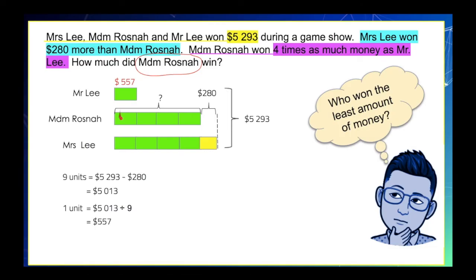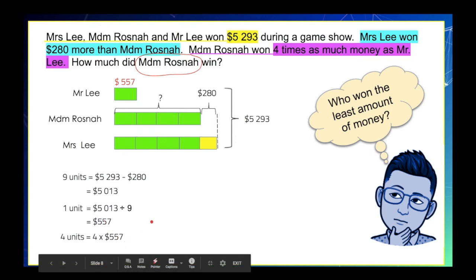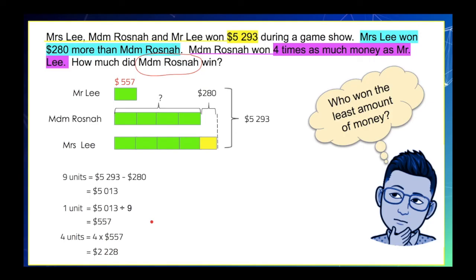Now that we know how much is one unit, we can easily find out the answer to this question. By looking at the model, we know that Madam Rosnah has 4 units here. So, we just simply multiply $557 by 4. And this will give us $2,228. So, therefore, Madam Rosnah won $2,228.